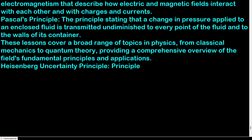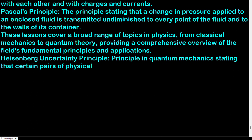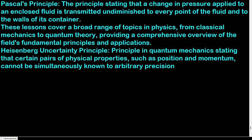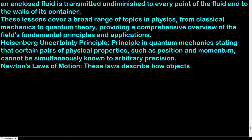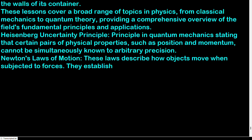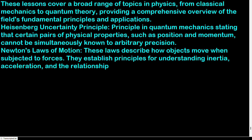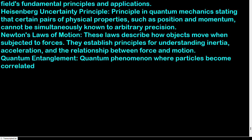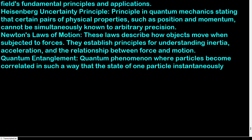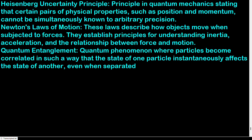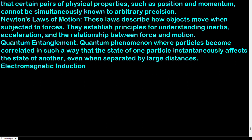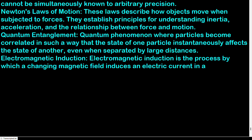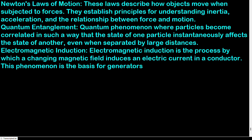Heisenberg uncertainty principle: principle in quantum mechanics stating that certain pairs of physical properties, such as position and momentum, cannot be simultaneously known to arbitrary precision. Newton's laws of motion: these laws describe how objects move when subjected to forces. They establish principles for understanding inertia, acceleration, and the relationship between force and motion. Quantum entanglement: quantum phenomenon where particles become correlated such that the state of one particle instantaneously affects the state of another, even when separated by large distances. Electromagnetic induction: the process by which a changing magnetic field induces an electric current in a conductor. This phenomenon is the basis for generators, transformers, and many electrical devices.